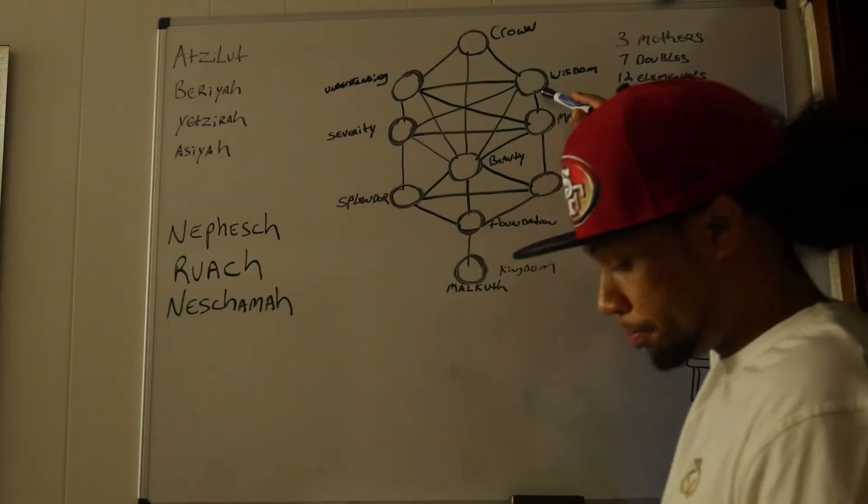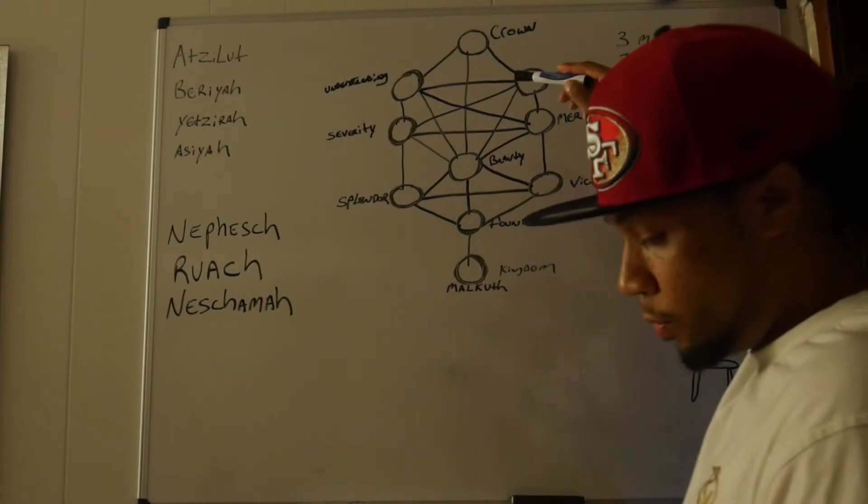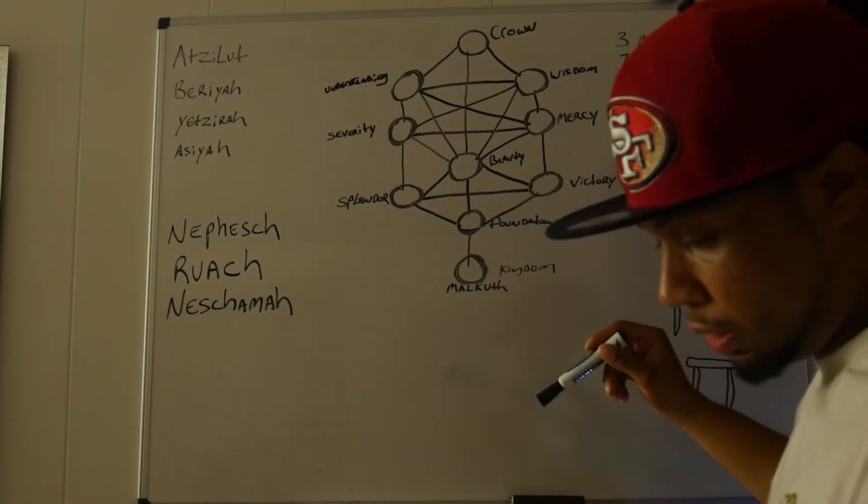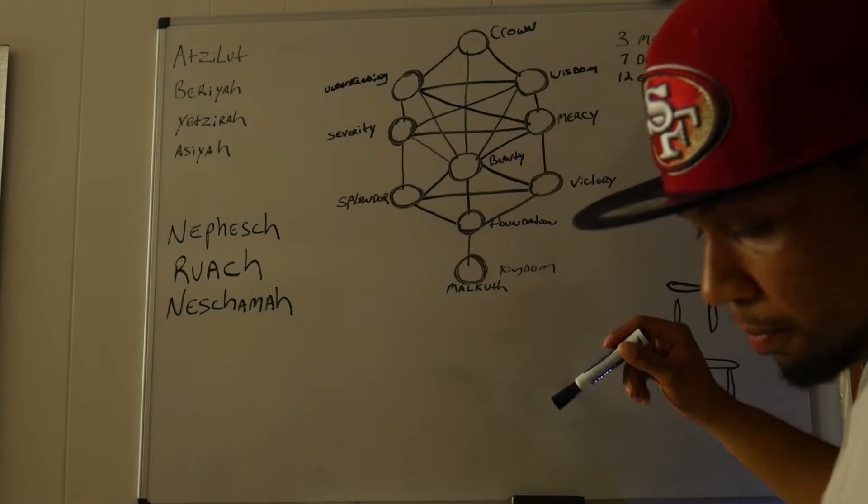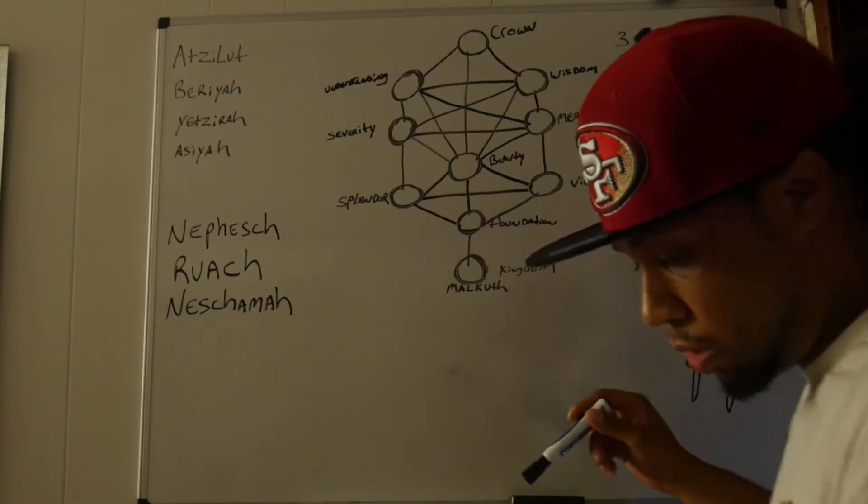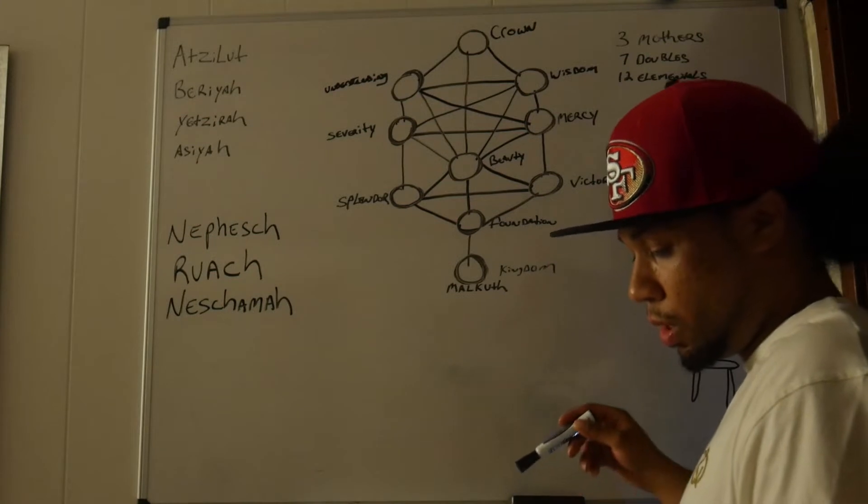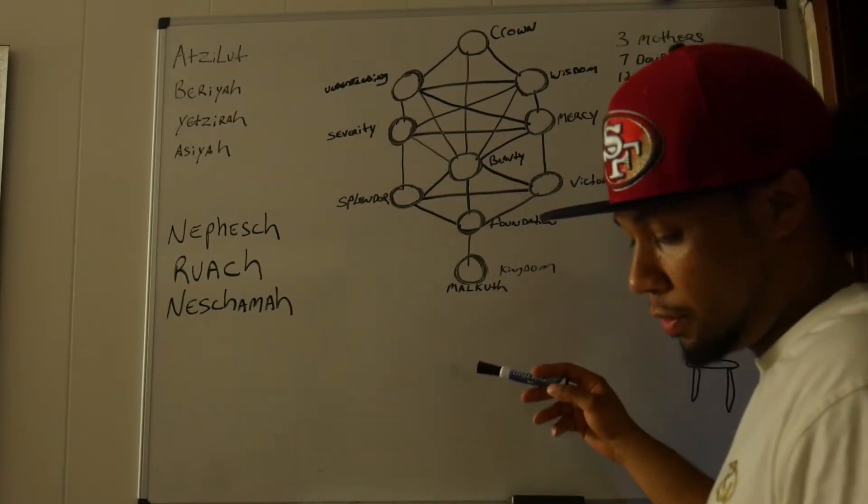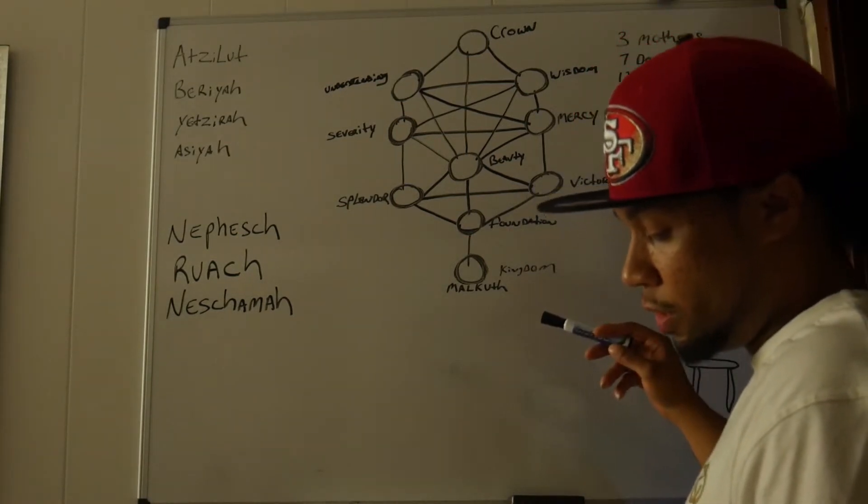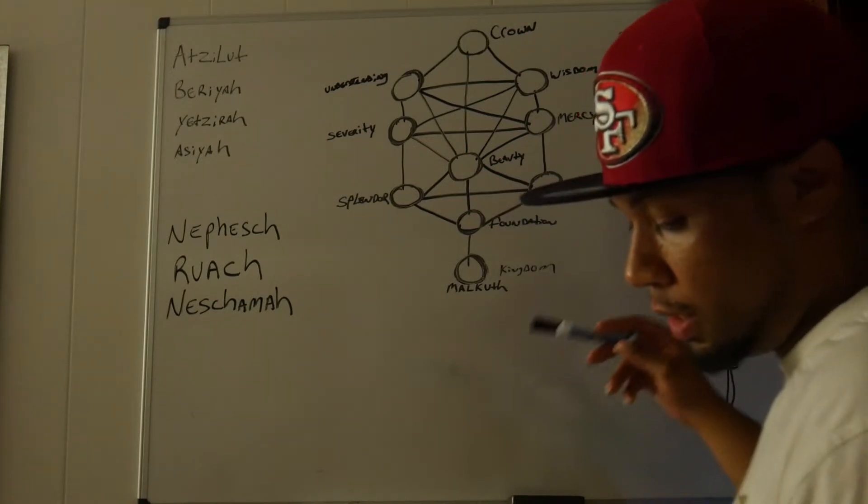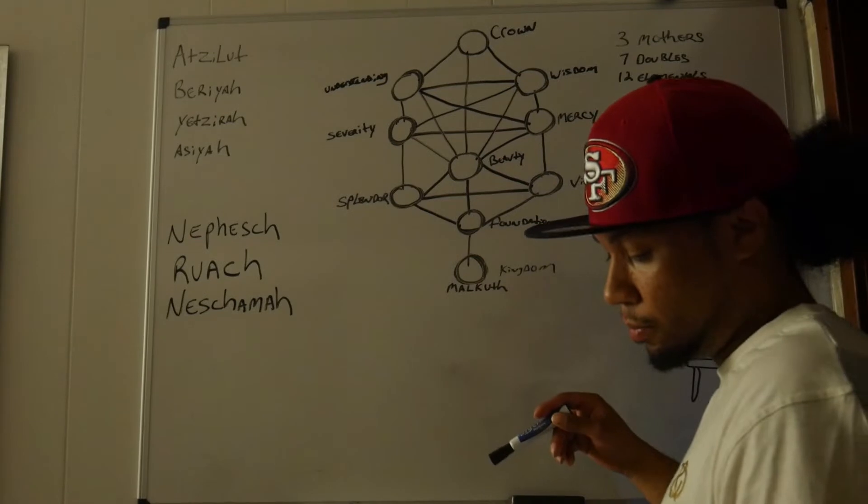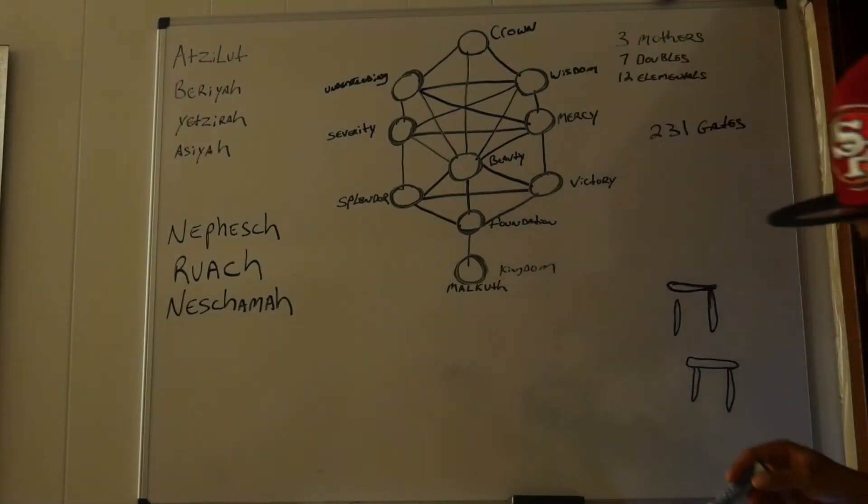So now we have Chokhmah, which is wisdom. Wisdom of God and wisdom of what man strives to attain. Gives man a chance to gain what is normally unattainable through the power of the intellect. Masloth is the starry heaven. The archangel of this energy center is Ratziel, prince of the knowledge of concealed things. The order of angels is Auphanim, the whirling forces called Cherubim.